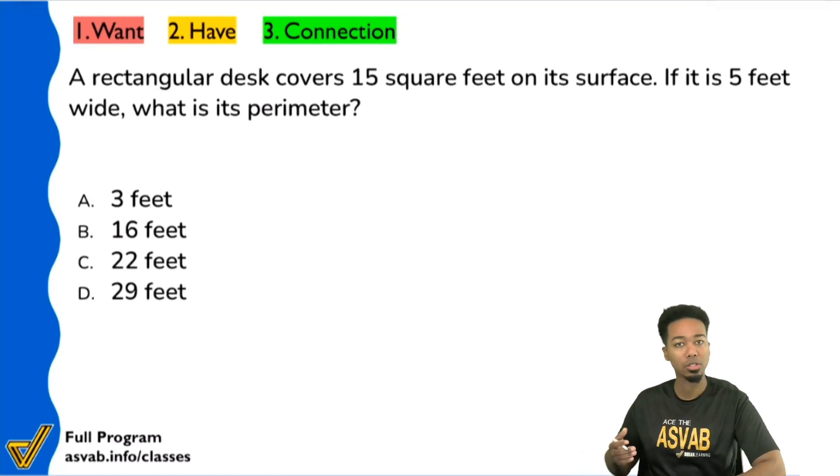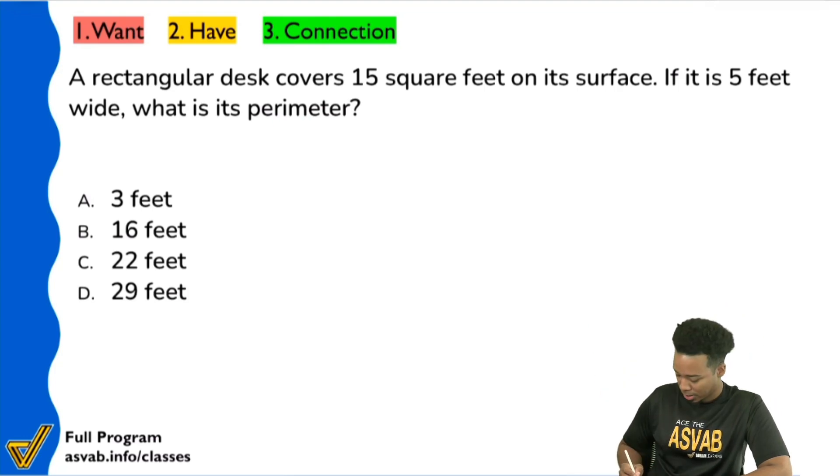We want to take a nice, calm, cool and collected approach. And so what we'll do first is identify the question. The question first is it says, hey, what is its perimeter?